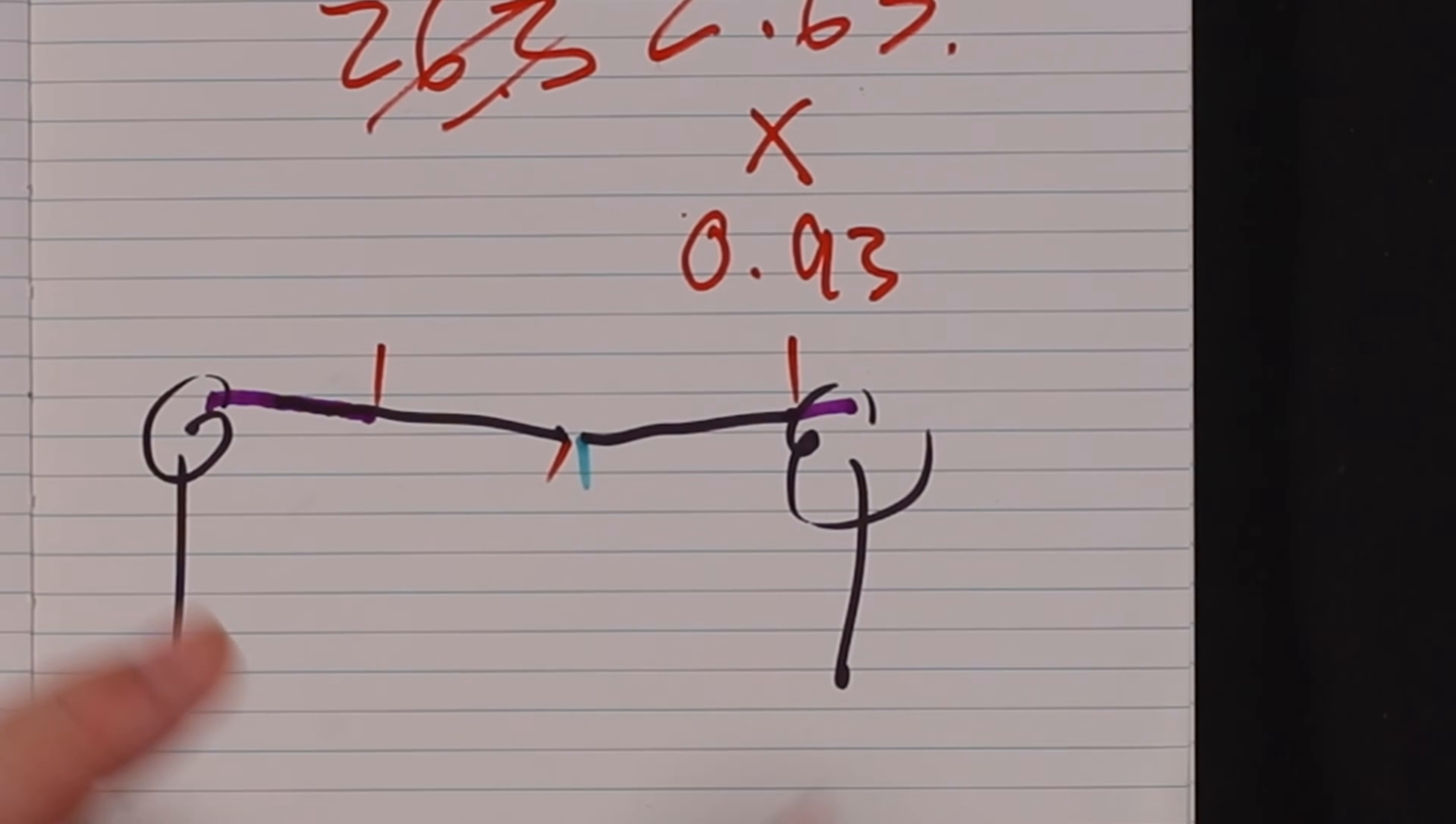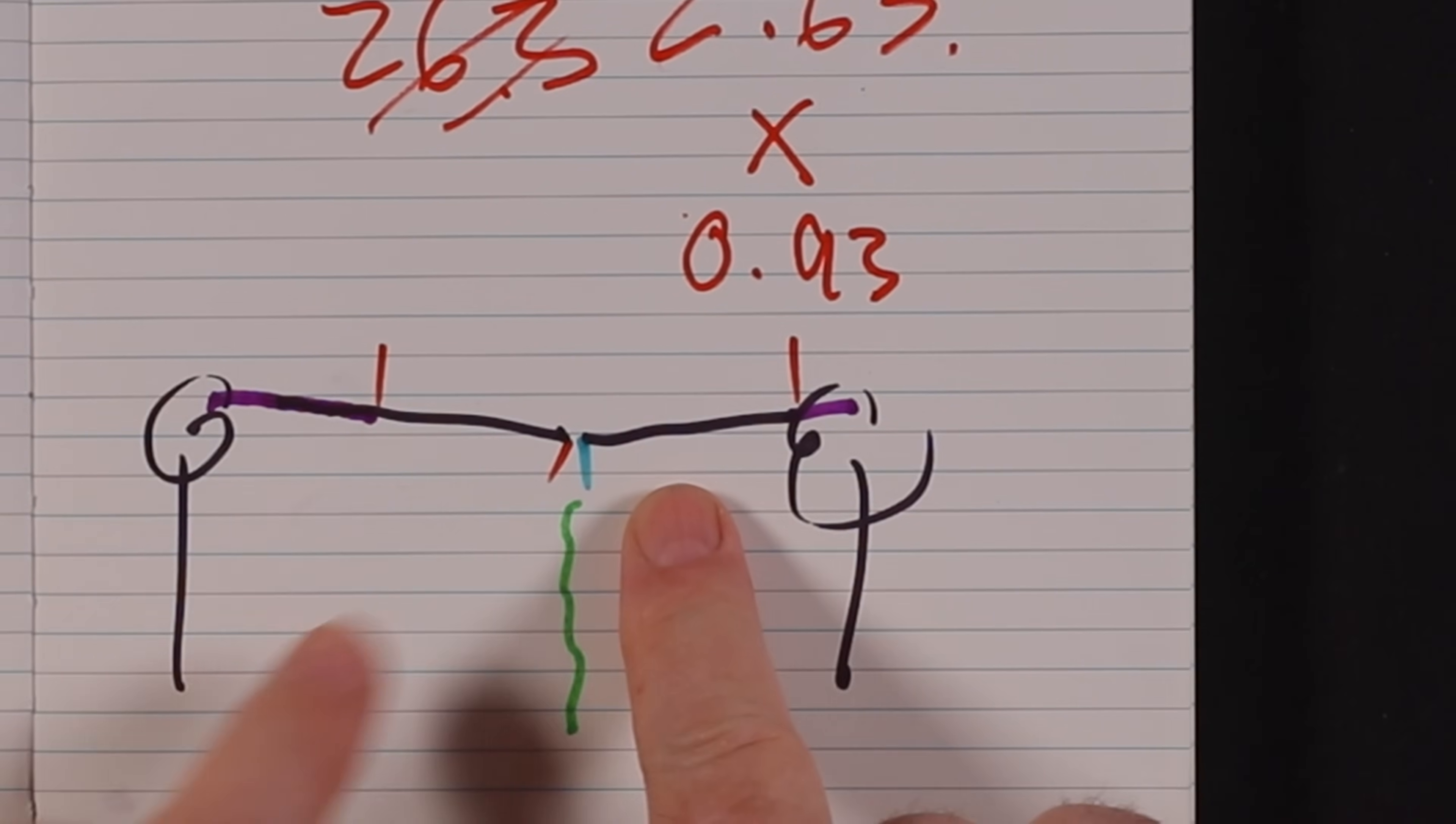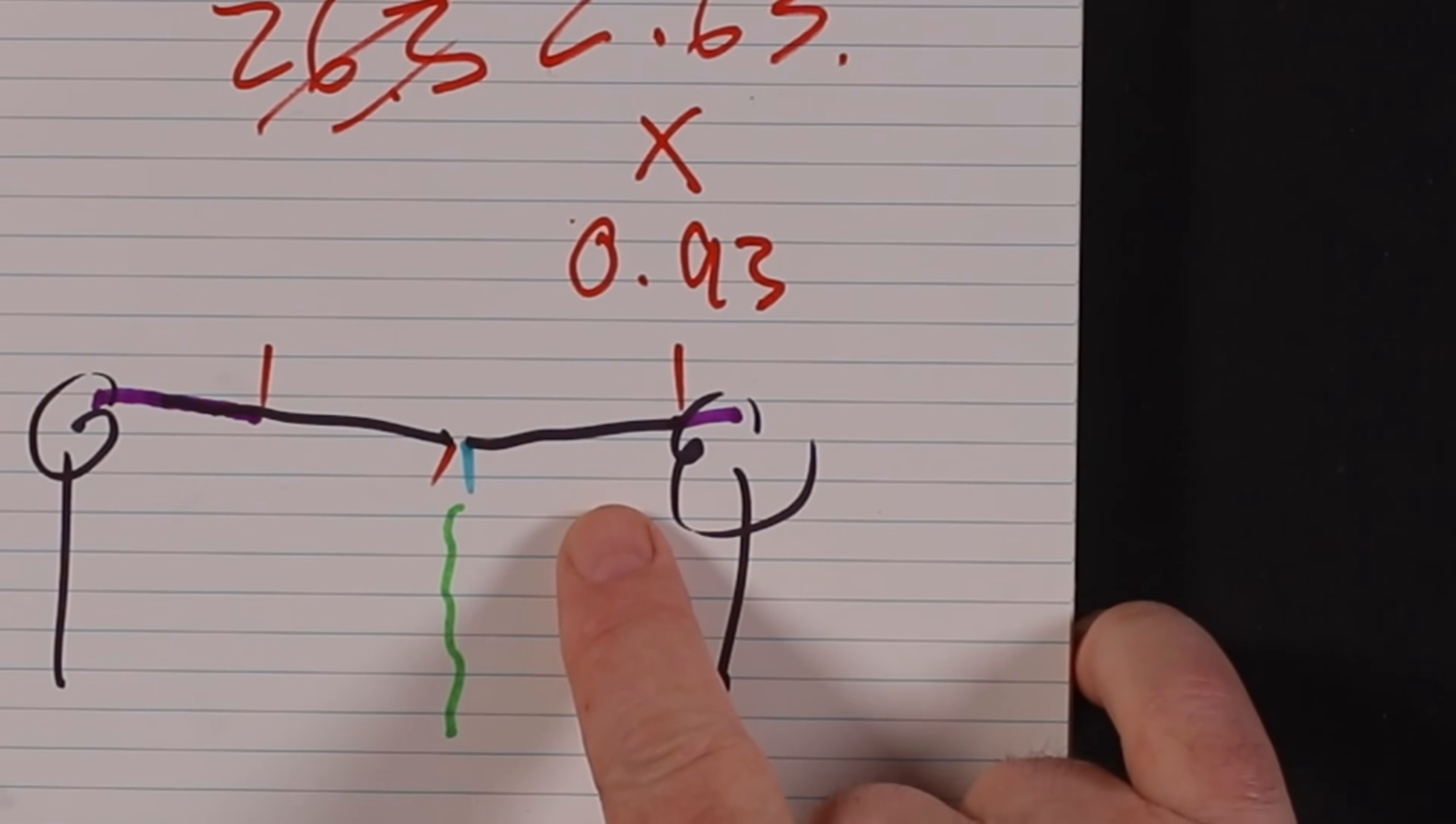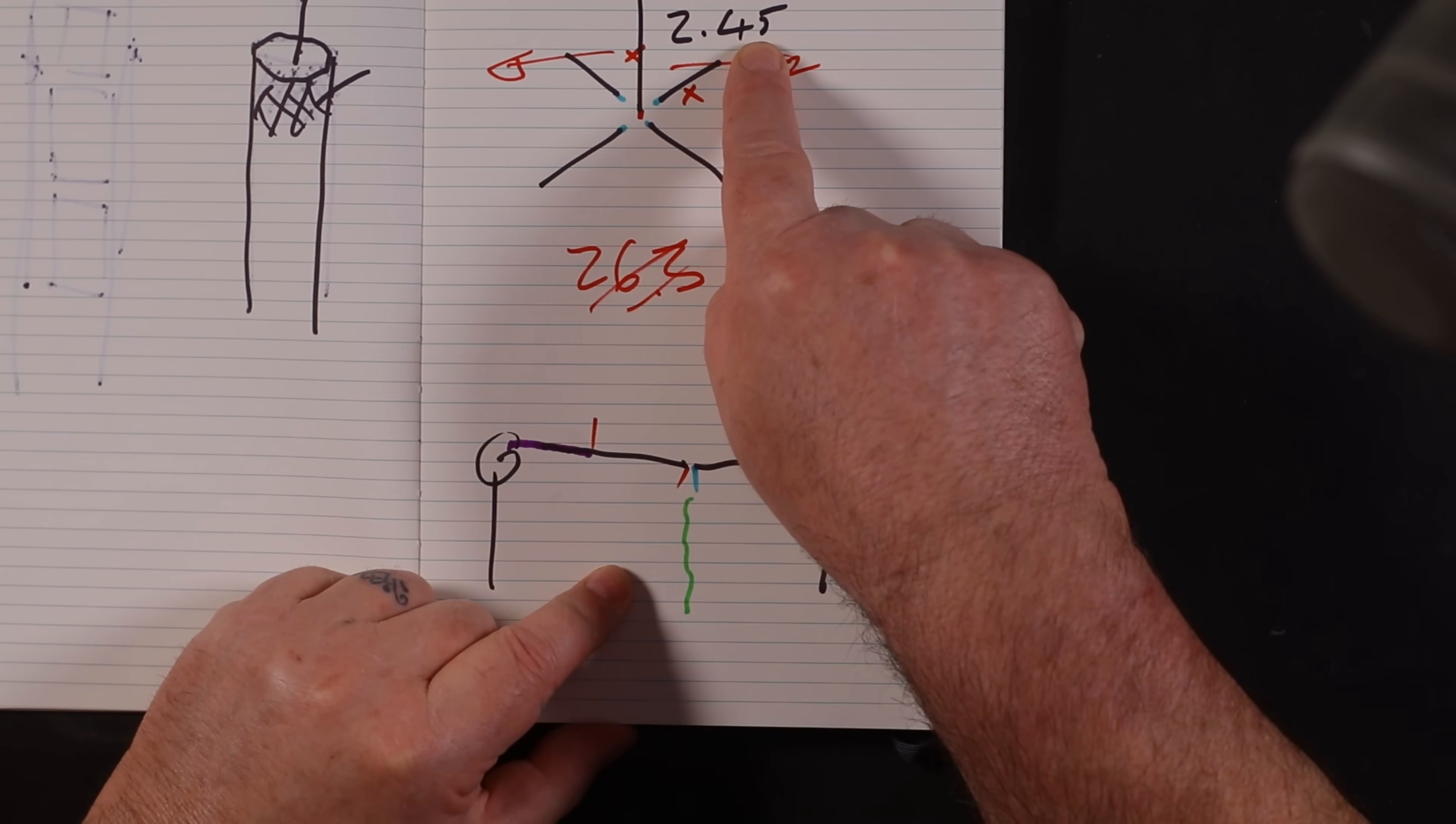These will be equal size, unlike what I've drawn here. So the actual length of this dipole is from there to there, which is equal. Then we've got our feeder coming out, coax coming down to the radio.